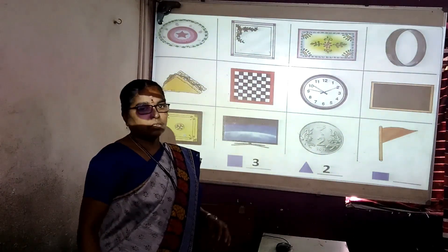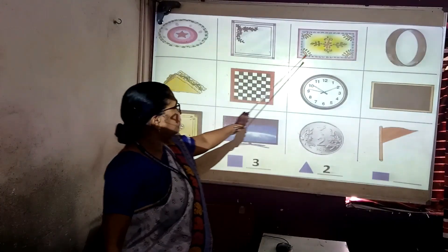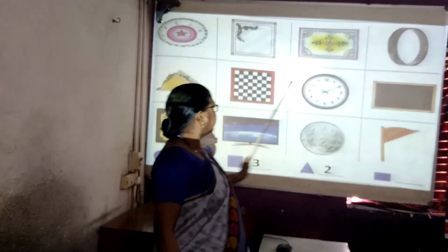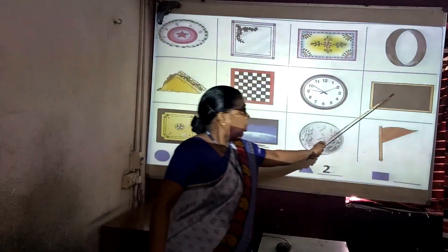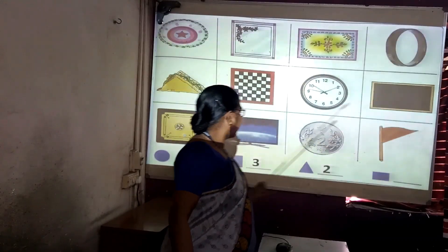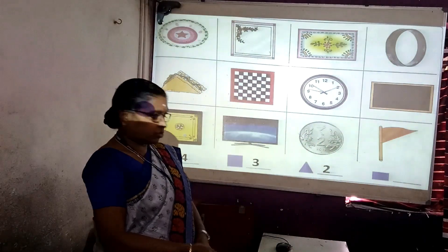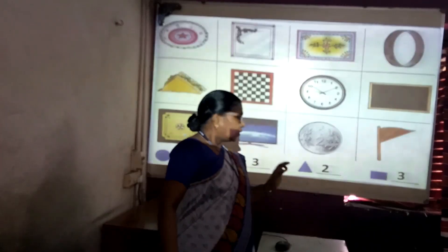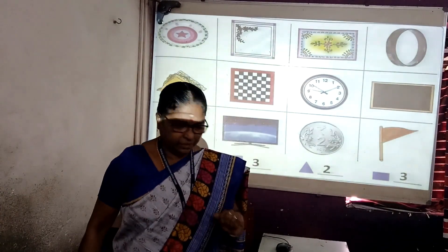Now let's see the rectangles. How many rectangles are there? One, two, three. Yes, three rectangles are there. So this is the example I have given.